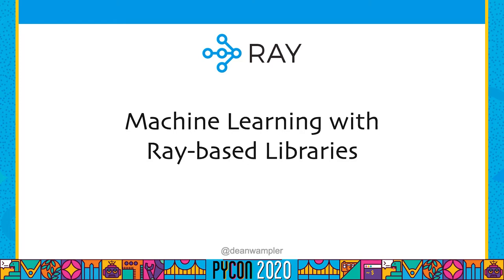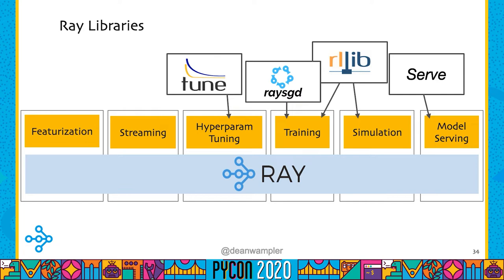Let's talk about the higher-level libraries for machine learning. Tune is for hyperparameter tuning. Ray SGD helps with distributed training. RLlib is perhaps the most popular library for reinforcement learning, and Ray Serve is a new library for model serving.